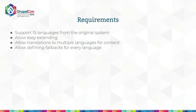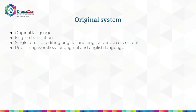Something really new was defining fallbacks for every language. In the original system they had a node in the original language and were able to add an English translation, but it was a single form, so editors had to scroll up and down the page — not very convenient. There was also a publishing workflow, but not in the Drupal sense of going through steps until you're allowed to publish; instead they had separate workflows for every language.